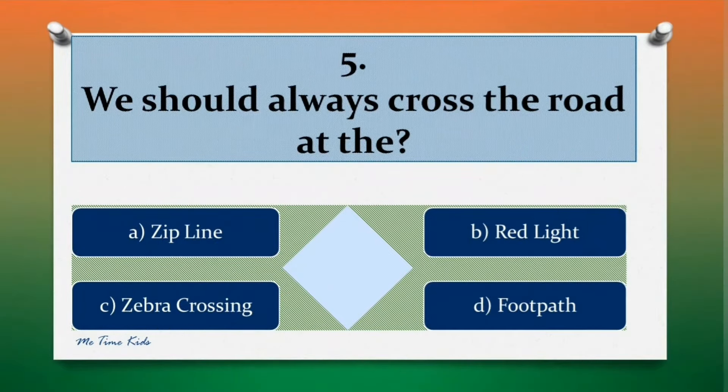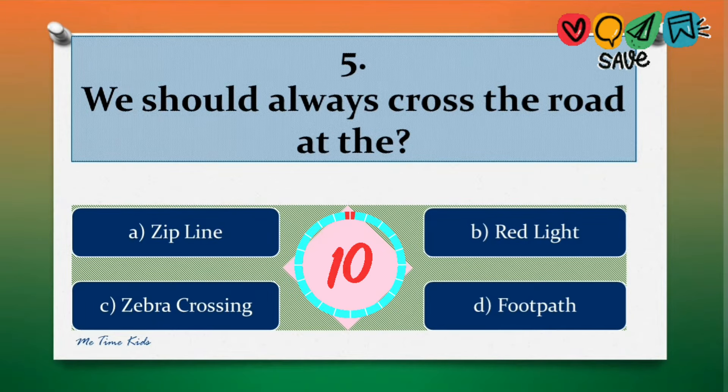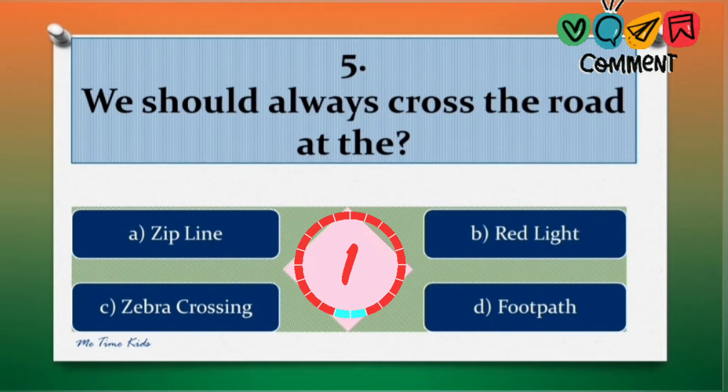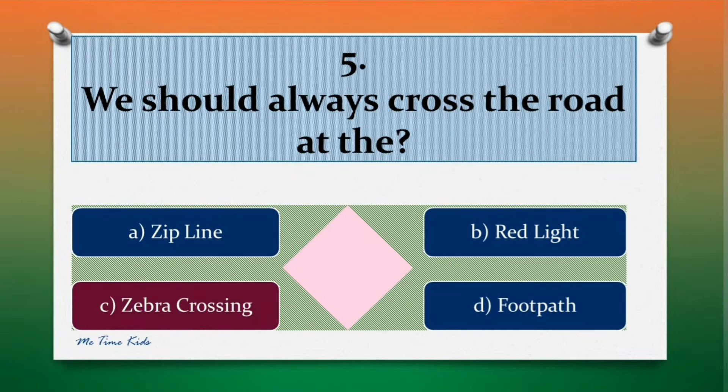Question 5. We should always cross the road at? Options are: a. Zip line, b. Red light, c. Zebra crossing, d. Footpath. Correct answer is c. Zebra crossing.